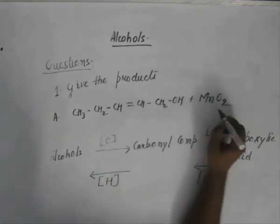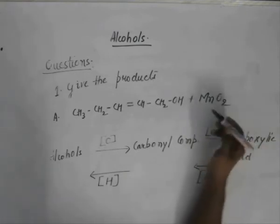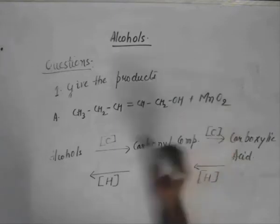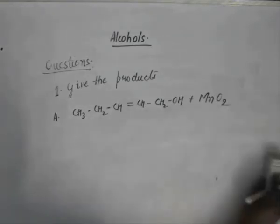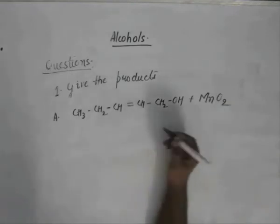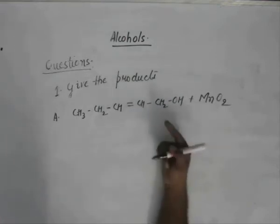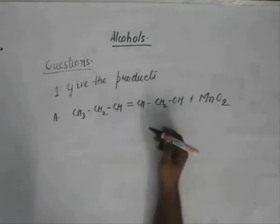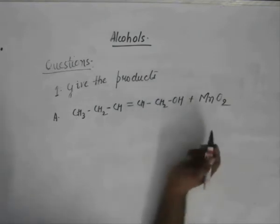So, MnO2 is an oxidizing agent. It will try and convert alcohols to carbonyl compounds to carboxylic acids depending upon its strength. I expect that you know some fundamentals about MnO2, K2Cr2O7.